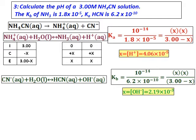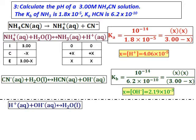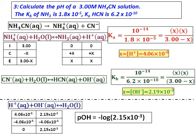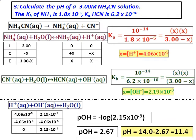Since there are both hydrogen ions and hydroxide ions in solution, they will react with each other. We set up an ICE table for H⁺ and OH⁻ concentrations. Since the hydrogen ion concentration is less than the hydroxide ion concentration, all of the H⁺ gets used up and we are left with some hydroxide ions. Using the remaining hydroxide ion concentration we calculate the pOH, then subtract from 14 to get the pH of the solution.